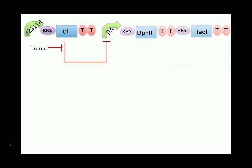Throughout this time, demethylase is produced at low amounts. This prevents leaky expression of restriction enzymes from killing the cells.